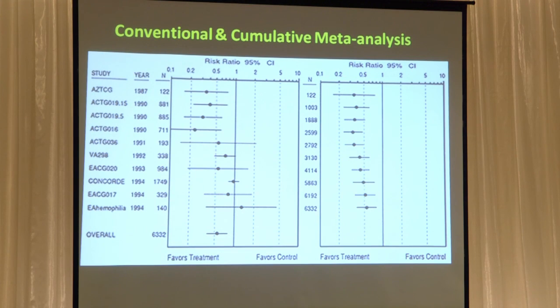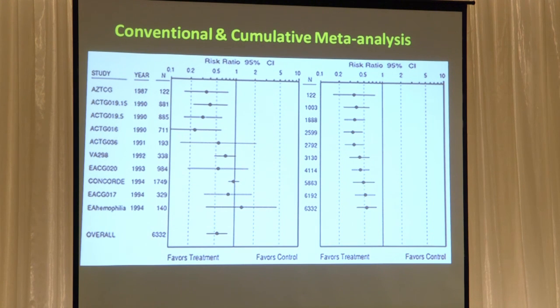A big reason that the summary statistic is not as narrow as the single largest study is the heterogeneity of effect estimates and precision of the trials that go into the meta-analysis. It also has to do with the technique used to do the meta-analysis. But by and large, big studies are the way you get confidence intervals smaller and increase precision.